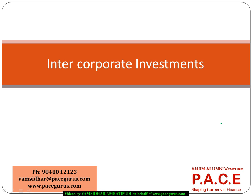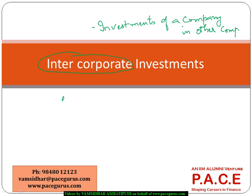In this session we will be dealing with intercorporate investments. As the word itself means, it refers to the investments of a company in other companies. That investment could be in the form of bonds, meaning they are like lenders, or it could be in the form of equity — some kind of a stake purchase in the other firm.